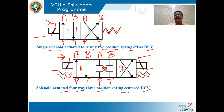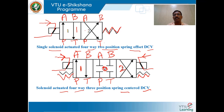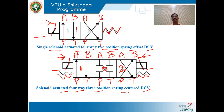When you energize the coil on the other side, the spool slides and shifts to that envelope configuration — P connects with B and A connects with T. This is how to draw a symbol for solenoid actuated four-way three-position spring-centered directional control valve.